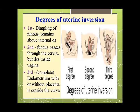There are different degrees of uterine inversion. In the first degree, dimpling of the fundus remains above the internal os. In the second degree, the fundus passes through the cervix and lies inside the vagina. In the third degree, it protrudes outside the vaginal opening. In the fourth degree, it can also become completely inside out.